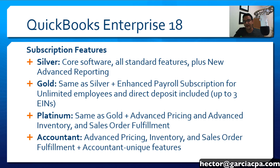When you purchase QuickBooks Enterprise, you're going to have four subscription options — and these are annual subscriptions. We have the Core Silver Edition, which includes all the core enhancements that QuickBooks Enterprise has over the Pro and Premier editions. There's the Gold subscription, which also includes enhanced payroll. There's the Platinum subscription, which includes payroll just like the Gold, plus Advanced Inventory, Advanced Pricing, and the new for 2018 Advanced Sales Order Fulfillment. And of course, the Enterprise Accountant Edition, which includes Advanced Pricing, Advanced Inventory, and Advanced Sales Order Fulfillment, but does not include the payroll option.